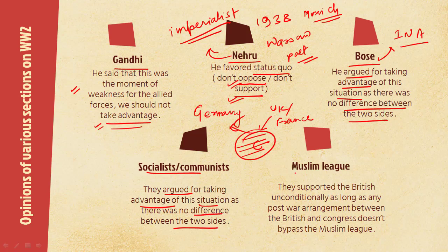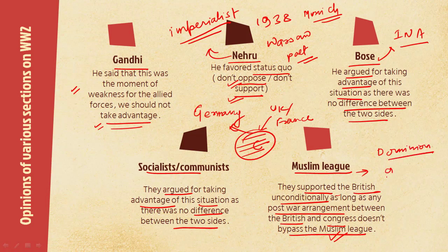Muslim League supported the British unconditionally — they did not put any condition for their support — as long as any post-war arrangement between the British and the Congress does not bypass the Muslim League. Basically they said we will not put any condition on our support, but if after the war you are offering Dominion status or independence, our point of view should also be conceded and our demand should be met. On that basis the Muslim League supported the British.